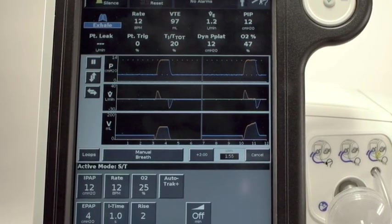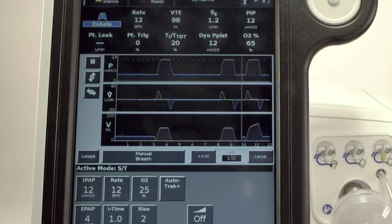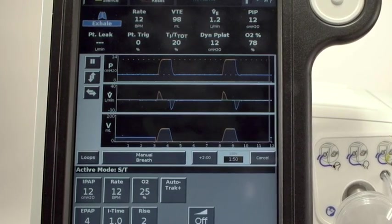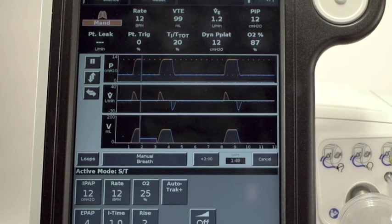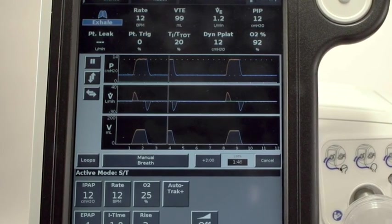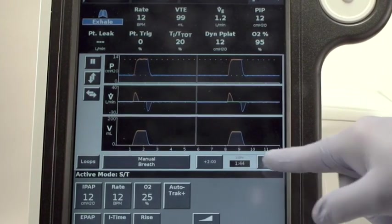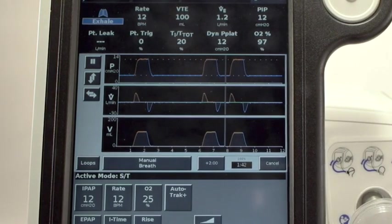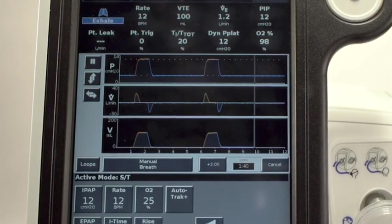Also, whenever the 100% O2 feature is selected, the V680 will perform a single-point O2 sensor calibration. This action also reveals two new buttons, Plus 2 and Cancel. Plus 2 gives an additional 2 minutes after the first two have elapsed to give a maximum total of 4 minutes at 100% O2.